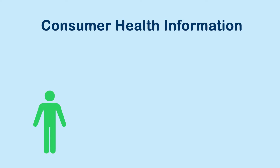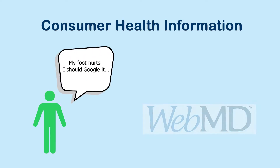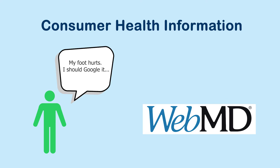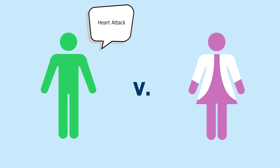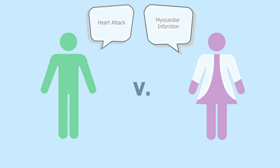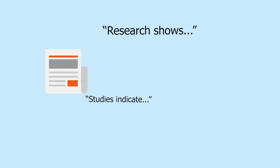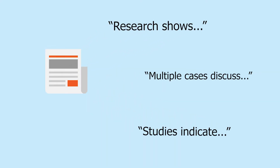The most popular type of health information is consumer health information. It can be found easily and in large quantities online, like WebMD, but varies greatly in quality and usefulness. Consumer health information is written predominantly for those who are not in the medical professions. It provides a summary of health and medical information in a more easily digestible form, without using industry jargon and terminology. Consumer health articles may mention research studies, but they often use vague references and don't give specifics.